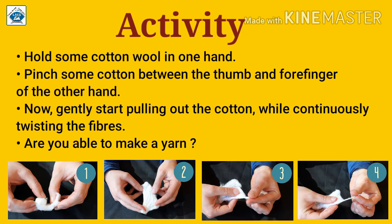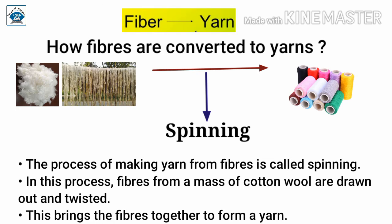As shown in the image at the bottom, the first step is to hold cotton, the second step is to form cotton, and the third step is to hold and twist it. So we can see that from the fibers, we can easily make yarns — fiber to yarn.